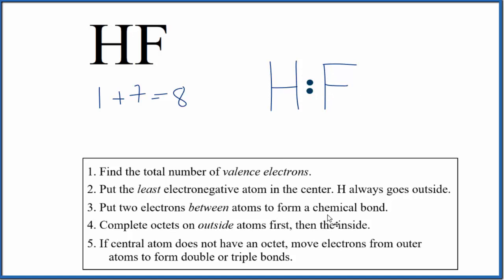Now we can complete the octets on the outside. Hydrogen, it only needs two valence electrons for its outer shell to be full. So we're done with hydrogen. We have a total of eight valence electrons. So let's put valence electrons around the fluorine, and it now has an octet, eight valence electrons. So we've used all eight valence electrons for HF.